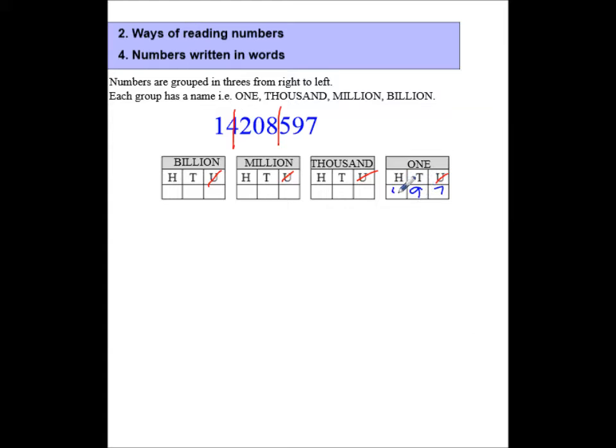Seven, nine, five, eight, oh, two, four, one. If you're doing an exercise, all you need to do is group them in threes. Remember, those are the ones, these are the thousands, and these are the millions. So you would then be able to say 14,208,597.